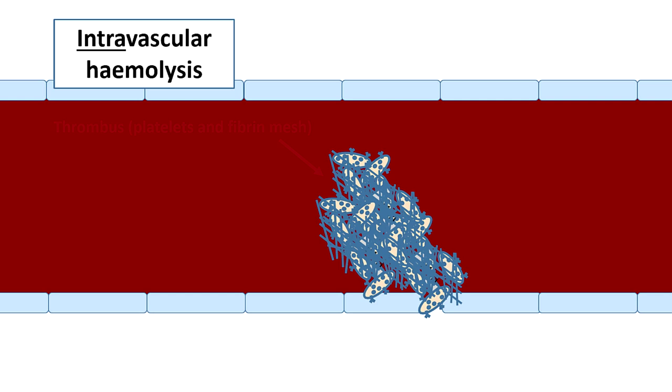Intravascular hemolysis. What's happening here is that red blood cells are getting broken down in the actual blood vessels themselves. It's usually a mechanical cause. We'll talk about some of these later on.